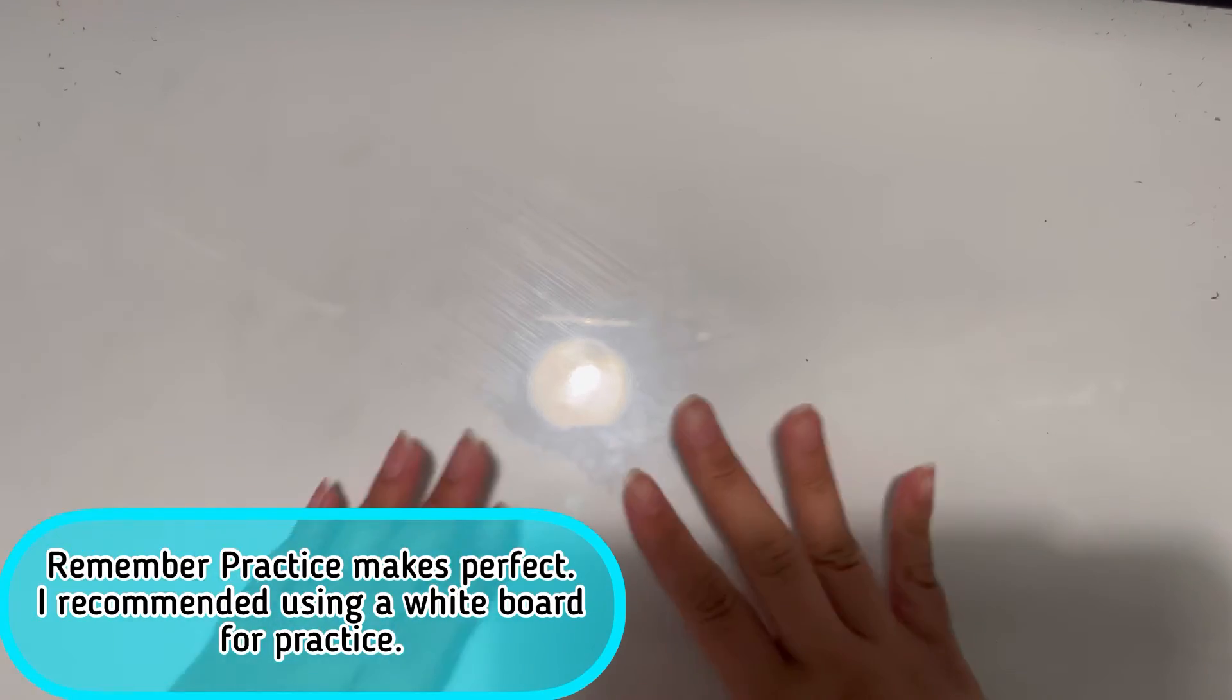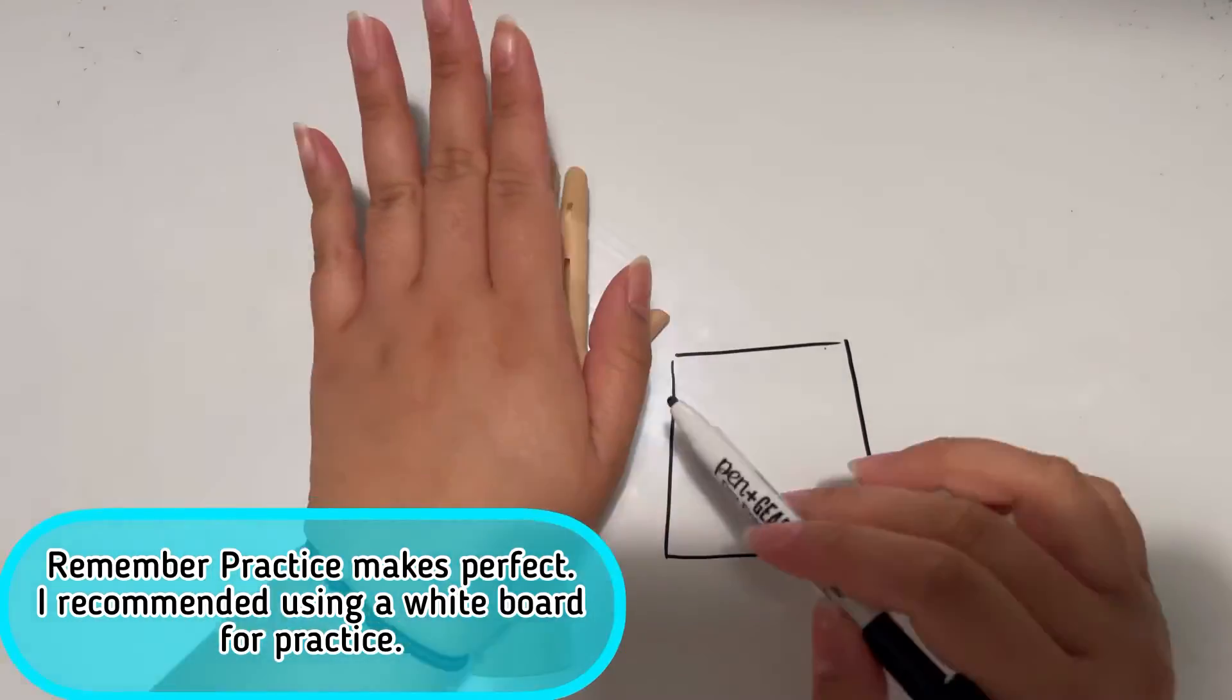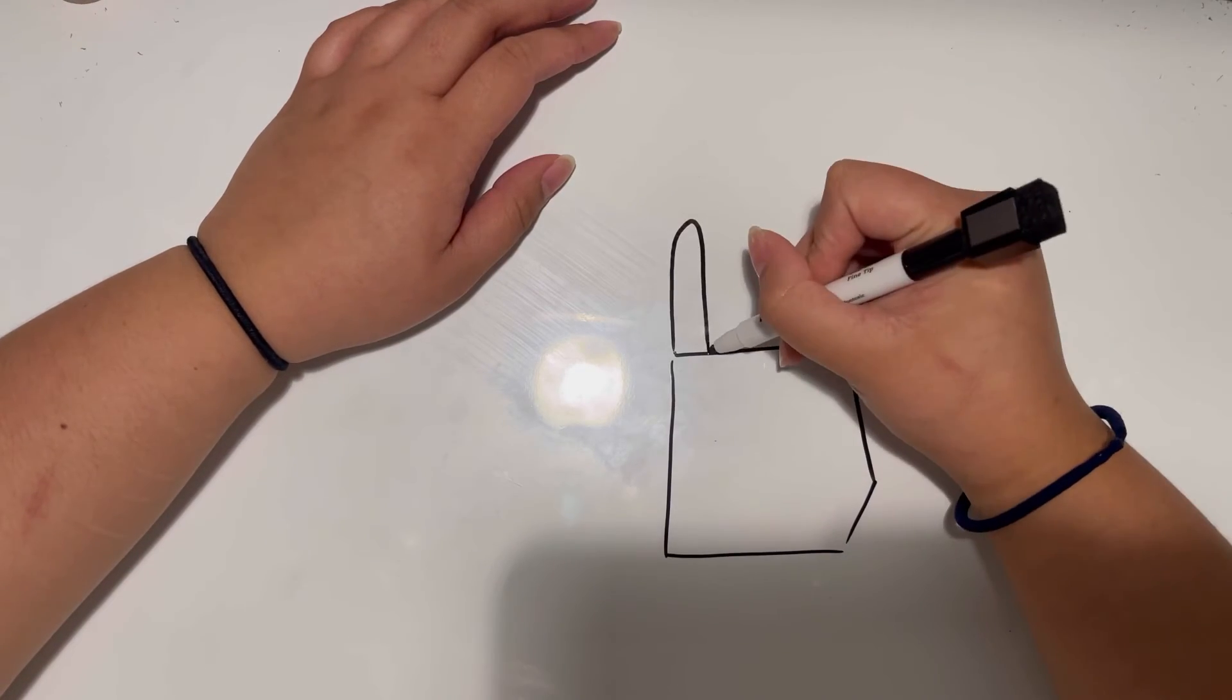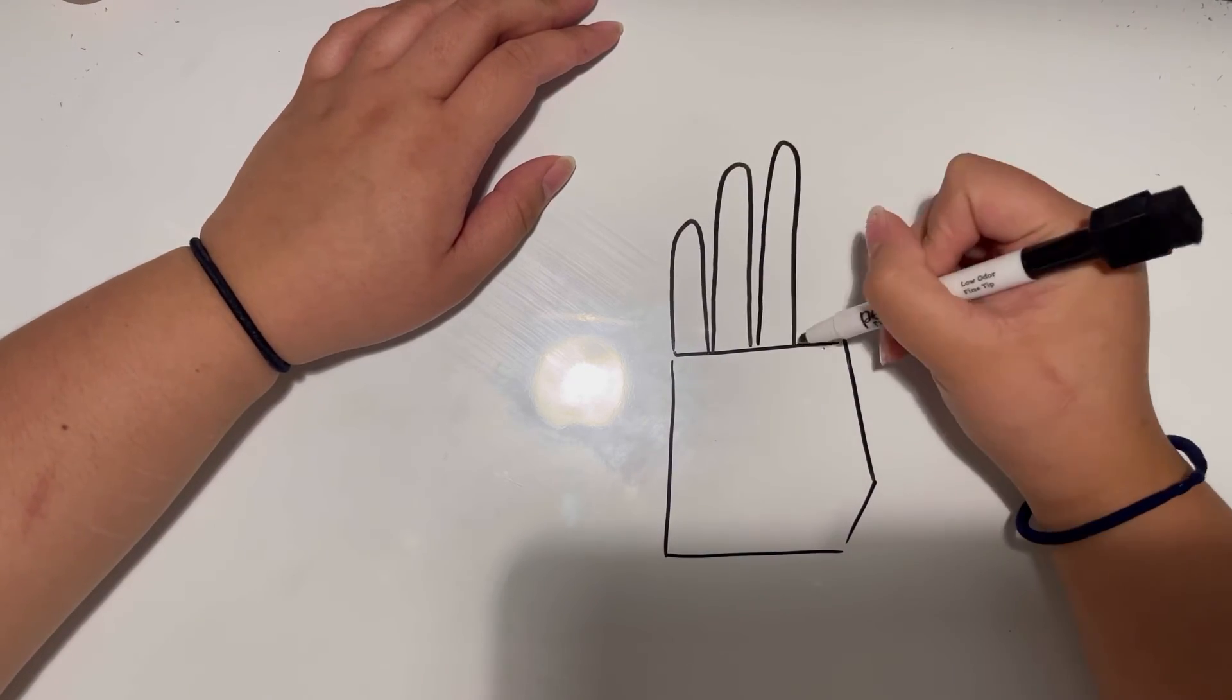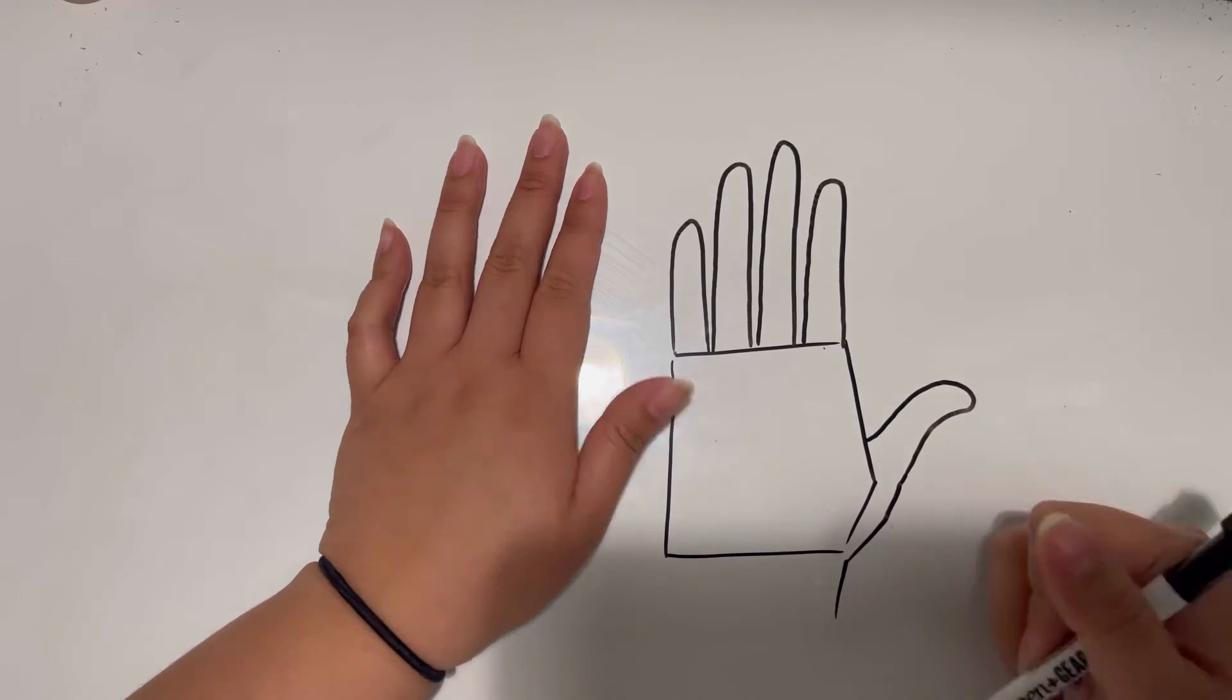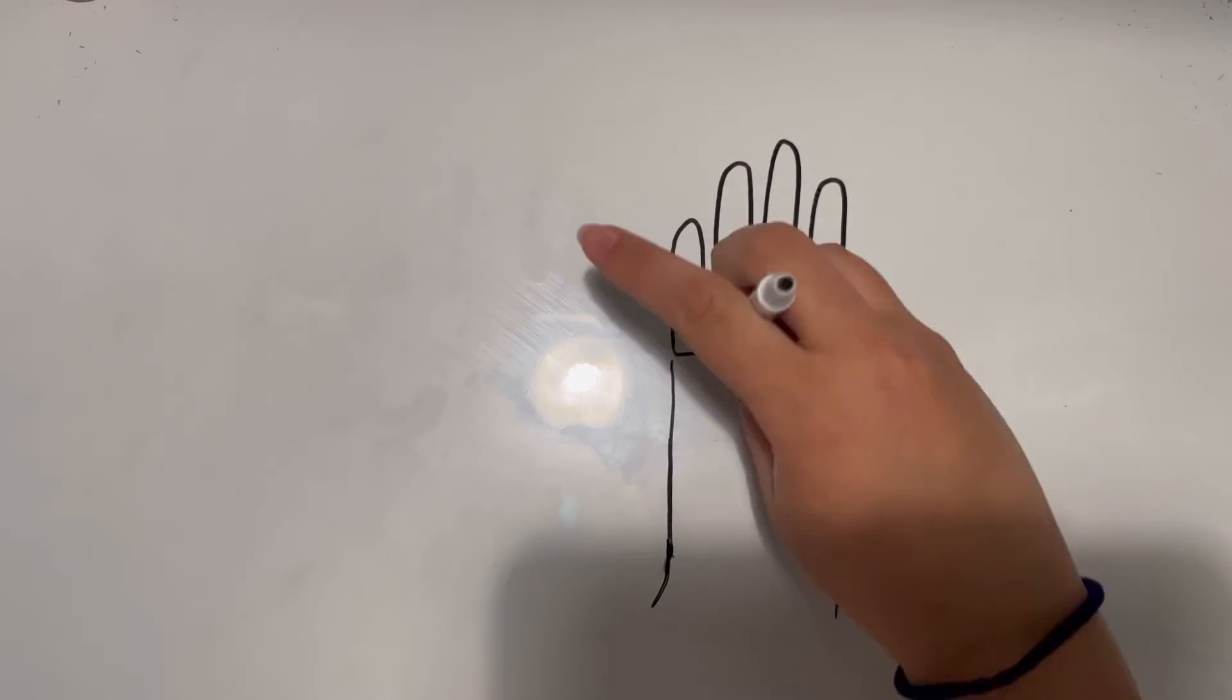Remember, practice makes perfect. I recommend using a whiteboard for practice so that you're not going to be wasting paper. But if you want to use paper and at the same time you want to make it as your own record, then yeah, sure, you can do that, whatever.